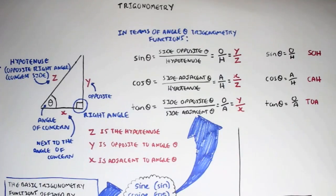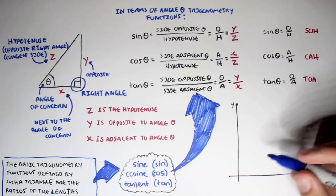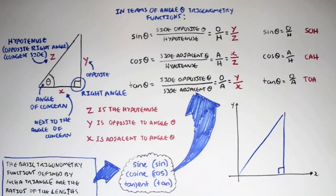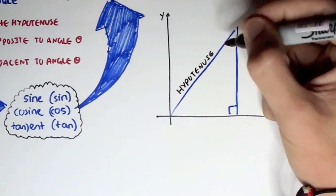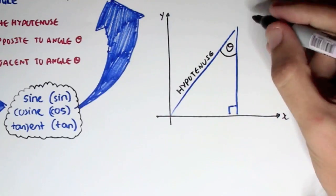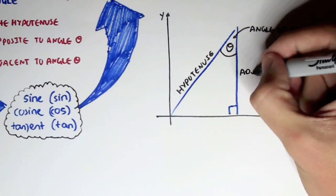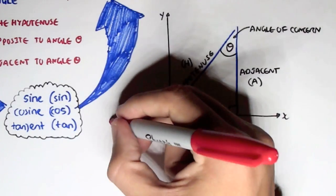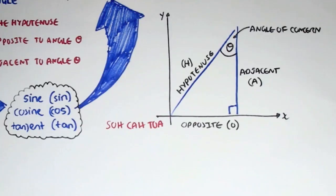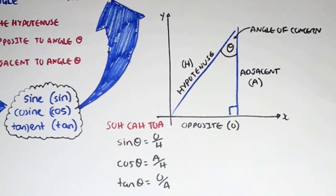Right angles can also occur in a plane, and this is typically how questions come to us. If we have the X and Y axis, we can have a triangle there. The angle of concern can be typically anywhere. If we know where the right angle is — the 90 degrees — we can assign the hypotenuse H. If this is the angle of concern, we can assign which sides are adjacent and which is opposite. Here is the adjacent A and here is the opposite O. Using SOH-CAH-TOA: sine angle equals O over H, cos angle equals A over H, and tan angle equals O over A.